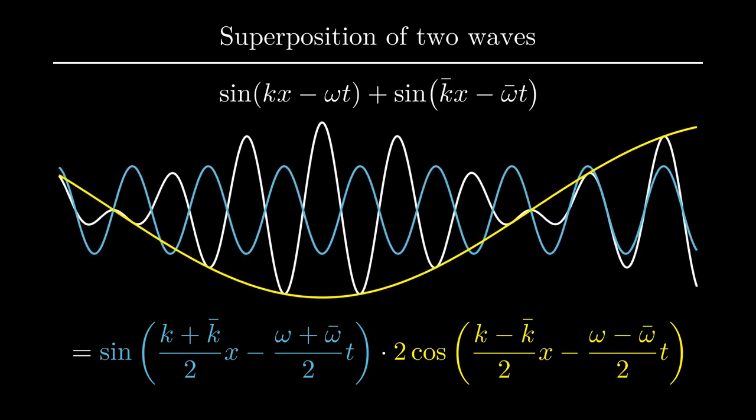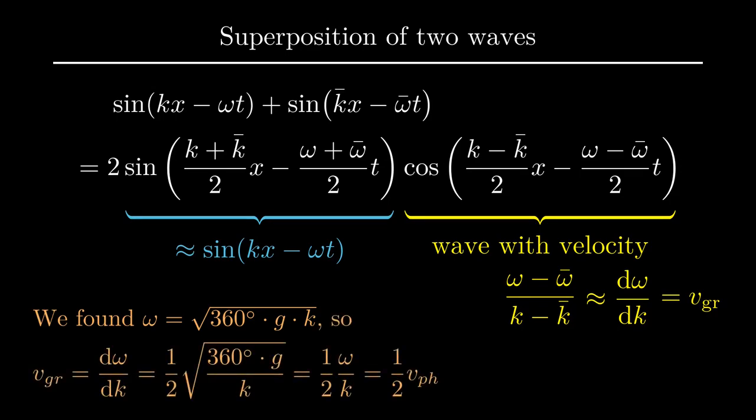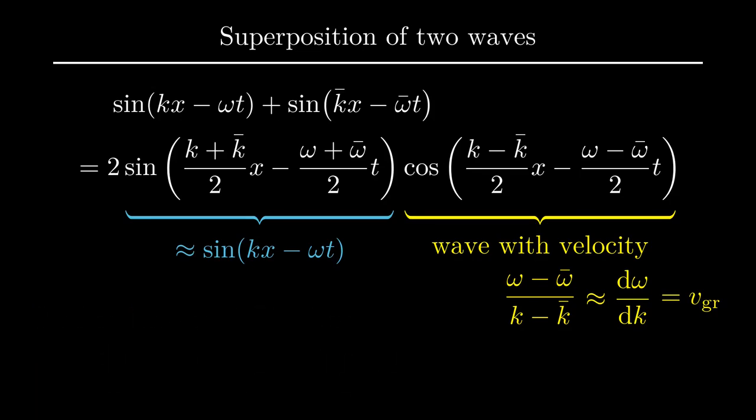For those of you who know calculus, there is a more enlightening way to write the group velocity. So far we've written the speed of the cosine wave as a fraction. You may recognize this fraction from the definition of a derivative. If k and k-bar are close to each other, it will be a very good approximation of the derivative of omega with respect to k. For all intents and purposes, we can consider this derivative to be the speed of the cosine wave, which is the group velocity. Earlier, we learned that the frequency is proportional to the square root of k. Using this, we can now derive that the group velocity is exactly half of the phase velocity. Again, you can pause for details. This is a key result. Wave packets move at half the speed of individual wave crests. Group velocity is half the phase velocity.